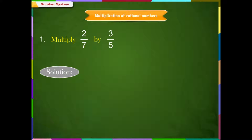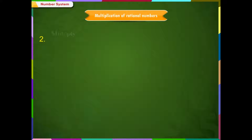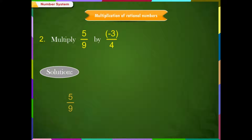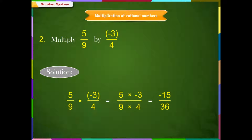Example 1: Multiply 2/7 by 3/5. Solution: 2/7 × 3/5 equals (2×3)/(7×5) equals 6/35. Example 2: Multiply 5/9 by minus 3/4. Solution: 5/9 × (minus 3/4) equals (5 × minus 3)/(9×4) equals minus 15/36, which simplifies to minus 5/12.